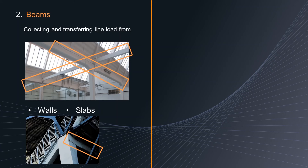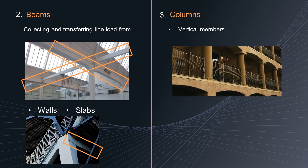Element 3: Columns. Columns are the vertical members that transmit load through compression. They accept load from the preceding structural element above and transfer it to the next structural element below.